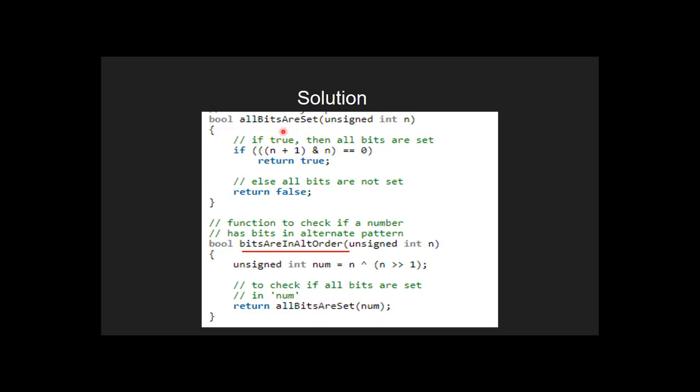Inside allBitsAreSet function, we do bitwise AND of n and n plus 1. If all bits in n are set, then this operation will result in 0.